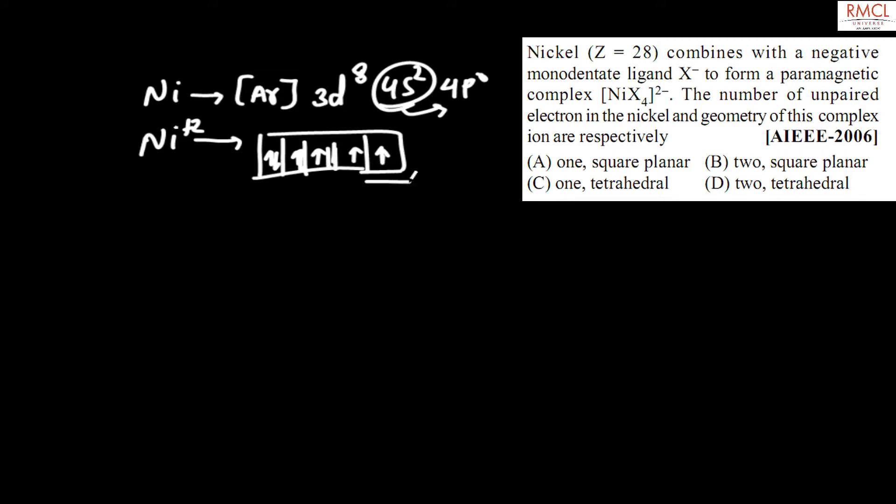X donates its lone pair. Since s and p orbitals are involved, the hybridization is sp³. The number of unpaired electrons present is equal to 2.